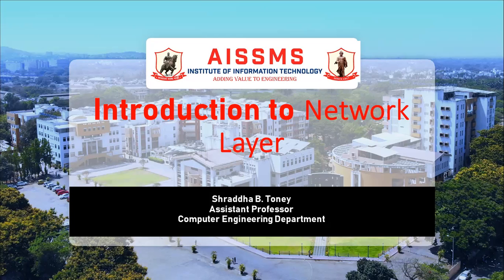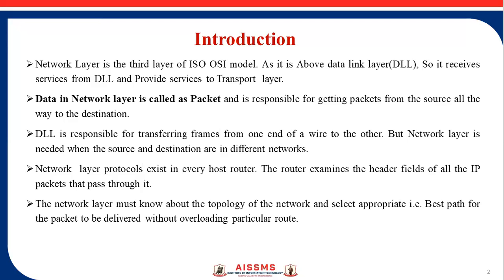Today we will discuss circuit switching techniques. Network layer is the third layer of the ISO-OSI model. As it is above the data link layer, it receives services from the data link layer and provides services to the transport layer. Providing services to the data link layer and transport layer is the main purpose of the network layer.